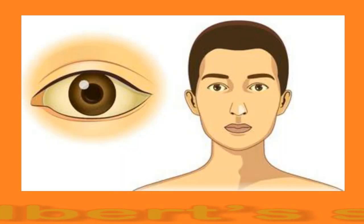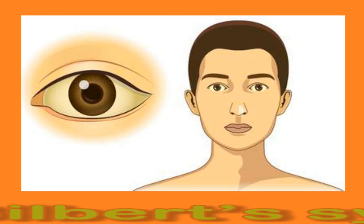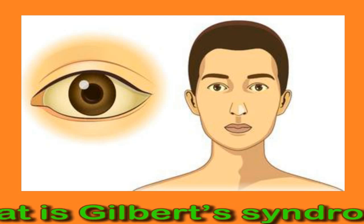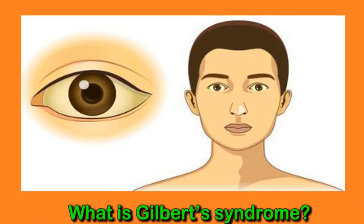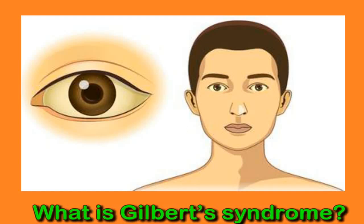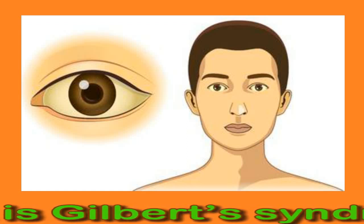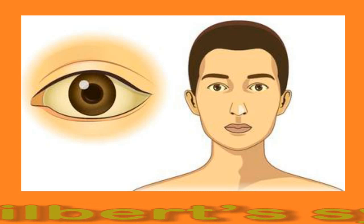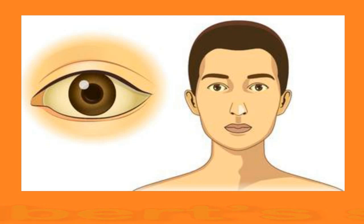Gilbert's syndrome is a mild form of high bilirubin where the levels go up and down because the process of removing it from the body is slowed down. The fluctuation is rarely enough to cause the skin to yellow, but some people may experience symptoms such as stomach pain or fatigue. Gilbert's syndrome is often discovered when a blood test is done for some other reason. There is a gene linked to Gilbert's syndrome that shows family patterns of heredity. This gene codes for an enzyme that enables the liver to convert bilirubin to its conjugated form. The absence of this gene in Gilbert's syndrome means this enzyme does not work.